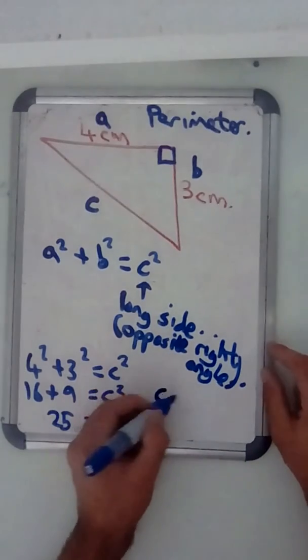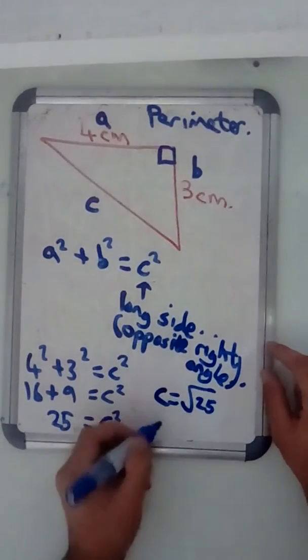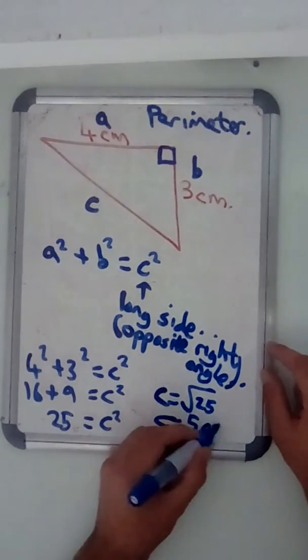So that would mean that C is the square root of 25, which is a very friendly number, C equals 5cm.